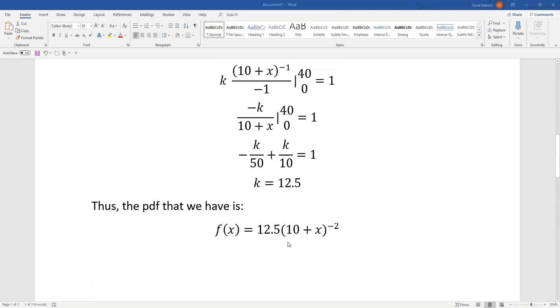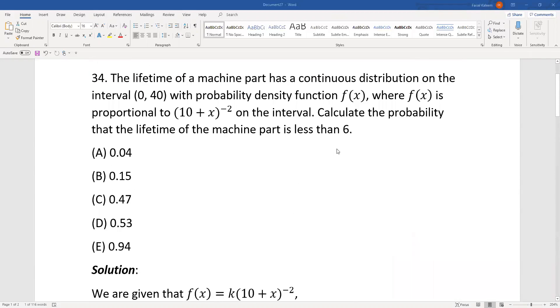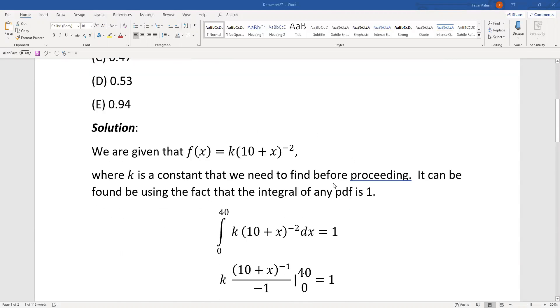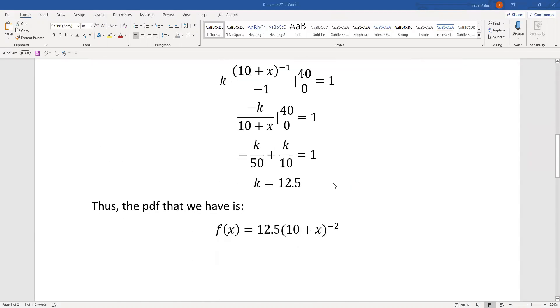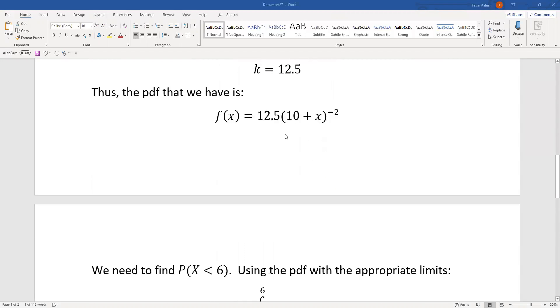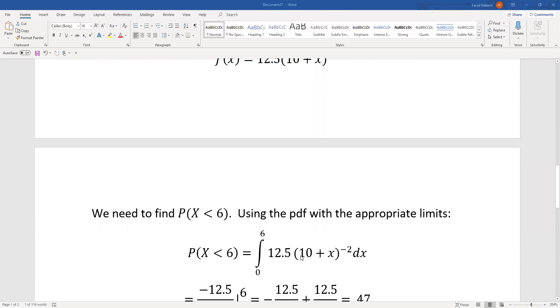Now we can find the probability that the lifetime is less than 6. Less than 6 means you integrate the pdf from 0 through 6. We have the pdf now with k replaced by 12.5, and then we integrate that from 0 through 6.